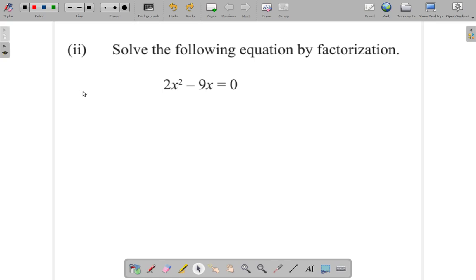Let's see what happens. You have 2x squared minus 9x is equal to 0. So 2x squared minus 9x is equal to 0.